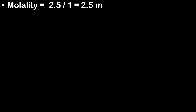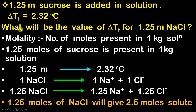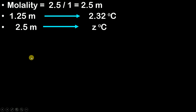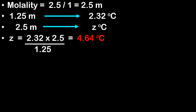So what will be the depression in freezing point for 2.5 molal? I do not know that, so I assume this to be Z. By simply cross multiplying, you find out the value of Z as 4.64°C. So the depression in freezing point of 1.25 molal NaCl is 4.64°C.